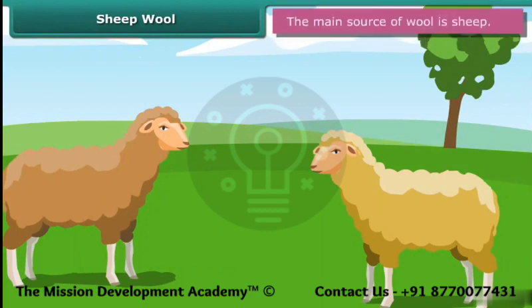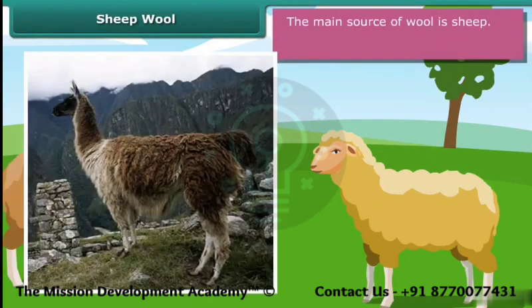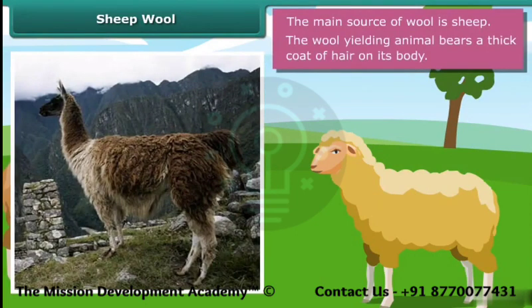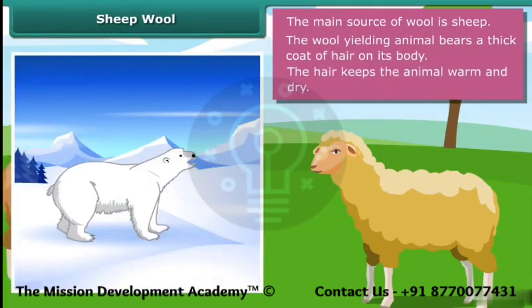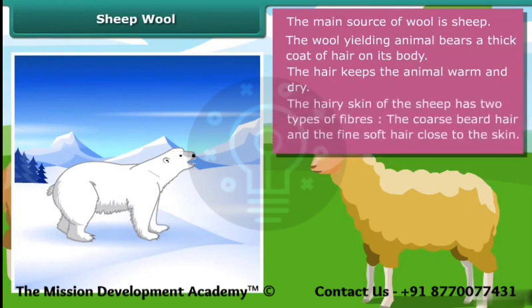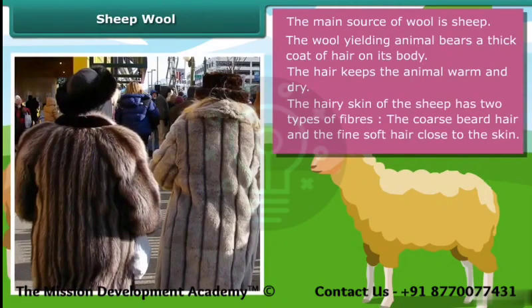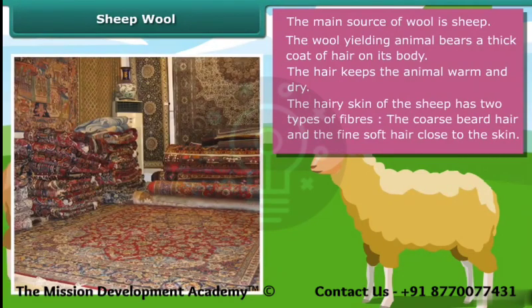The main source of wool is sheep. The wool-yielding animal bears a thick coat of hair on its body. The hair traps air, and since air is a poor conductor of heat, the hair keeps the animal warm and dry, allowing it to live in cold and harsh climates. The hairy skin of the sheep has two types of fibers: the coarse beard hair and the fine soft hair close to the skin. The fine hair provides fibers for making woolen clothes, while the coarse hair is used for making carpets.